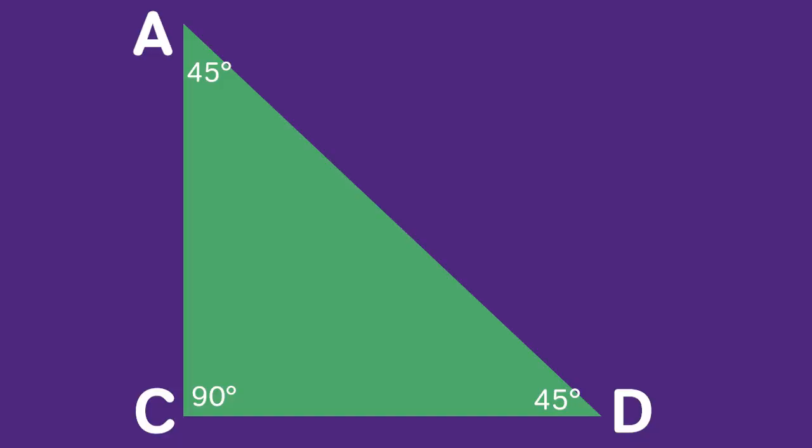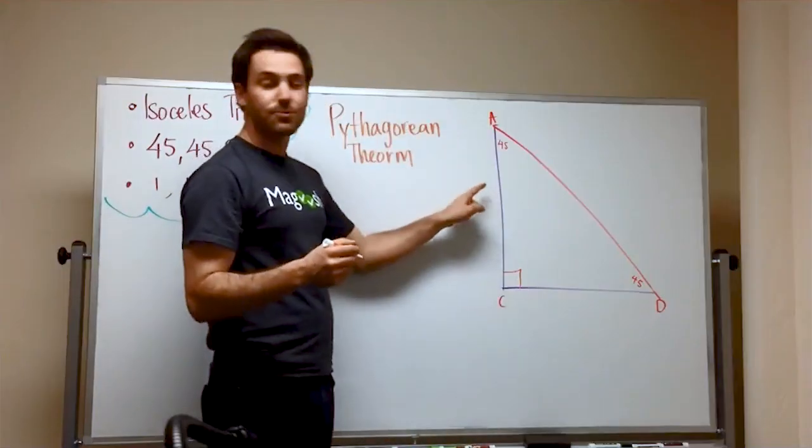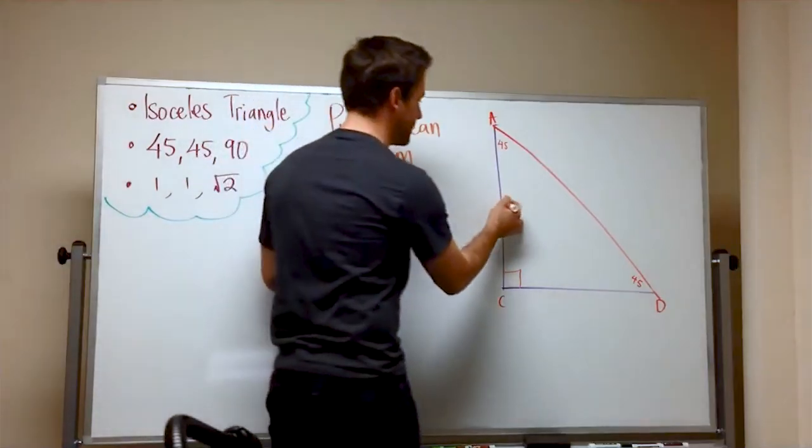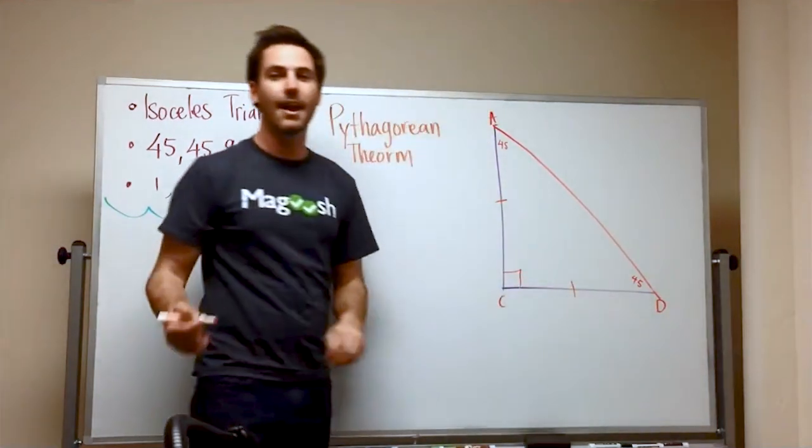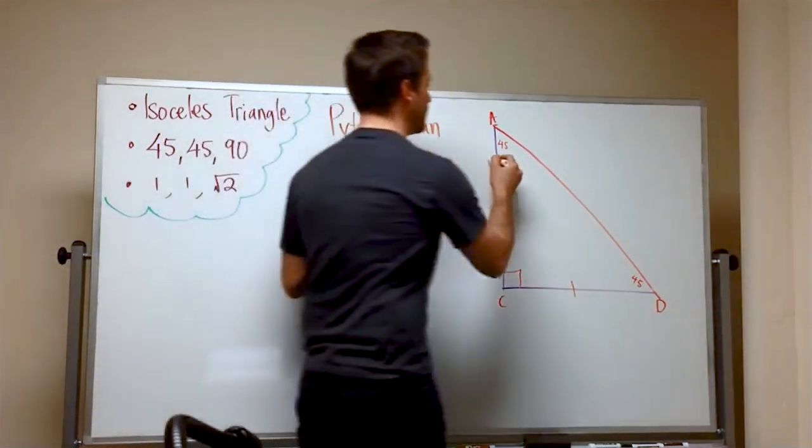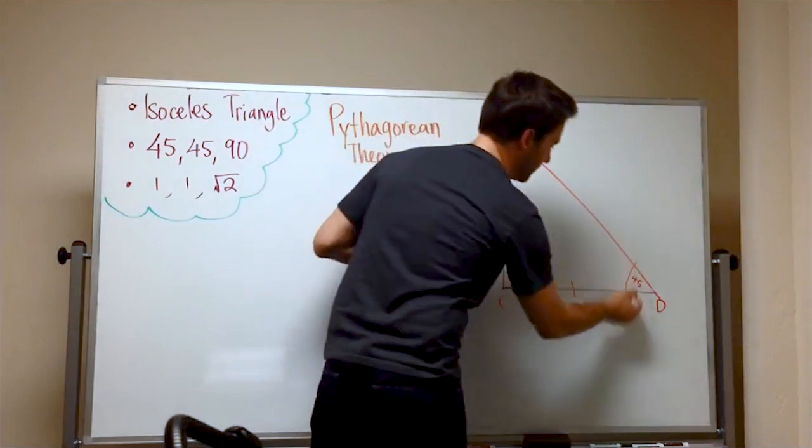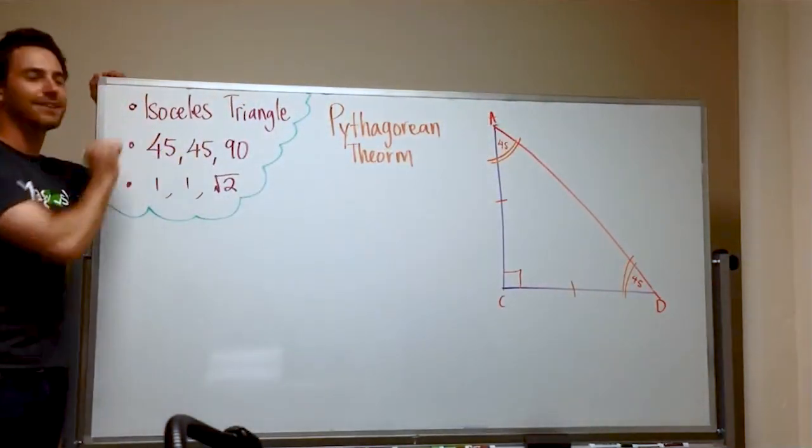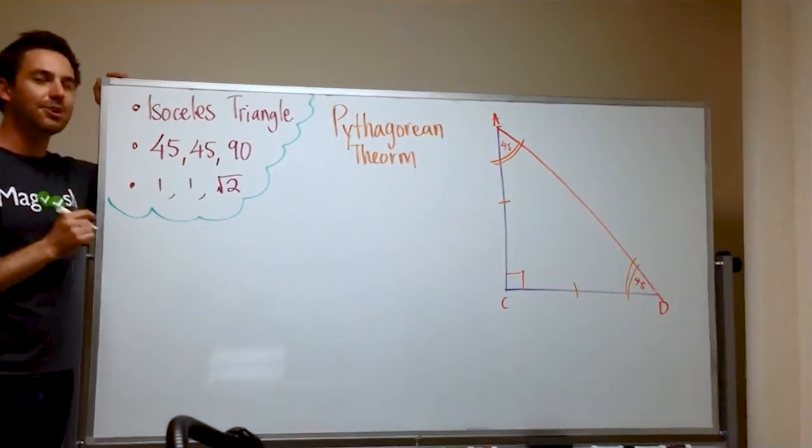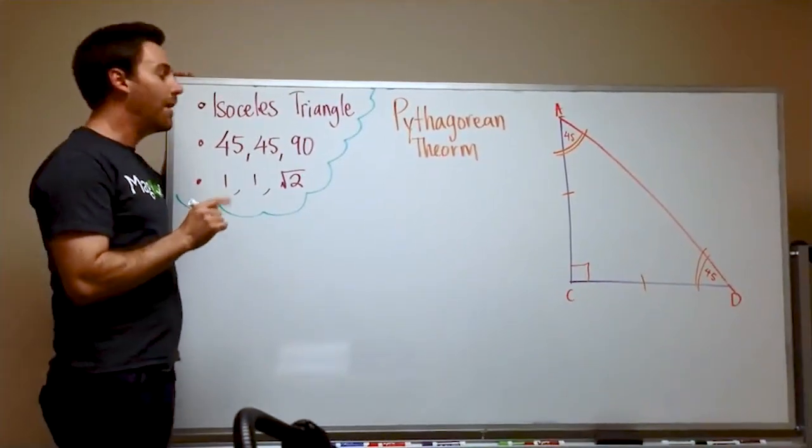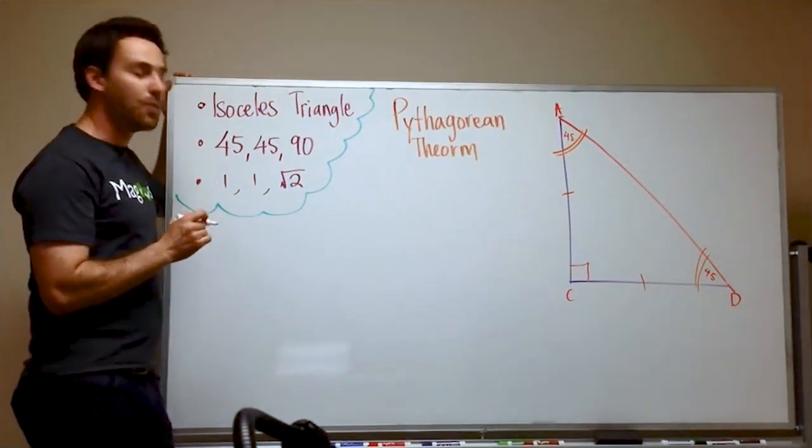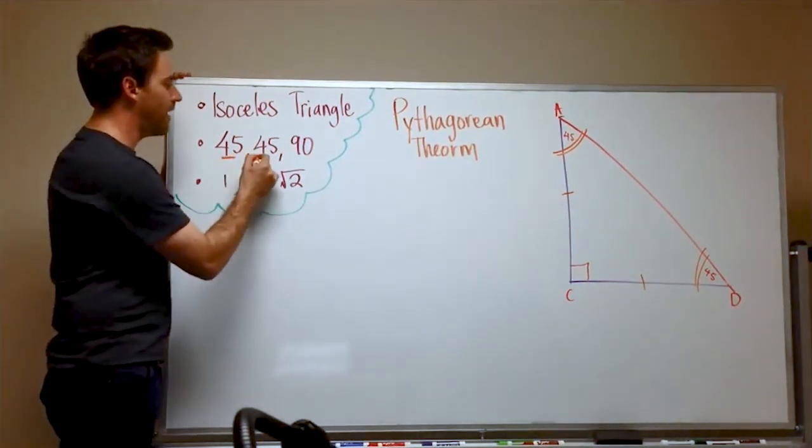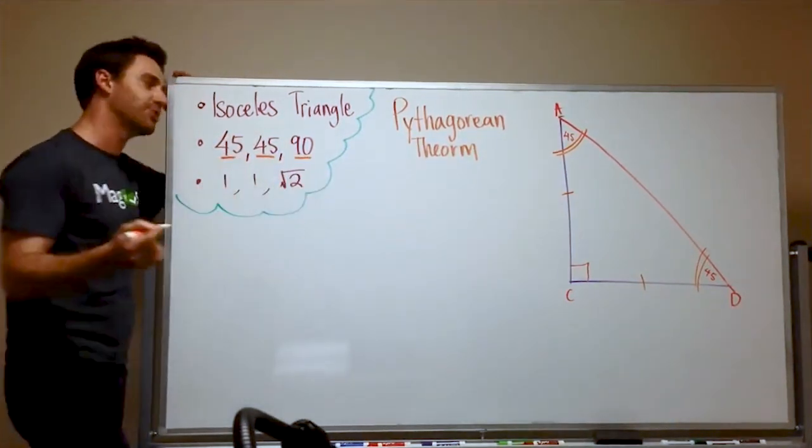So now we have something really interesting here. Two things of note. One, since this was a square, both sides are equal. So this side is equal to this side, and this angle is equal to this angle. That is the definition of an isosceles triangle. Now, this is a very special isosceles triangle because it was derived from a square and thus a 45, 45, 90 degree triangle.